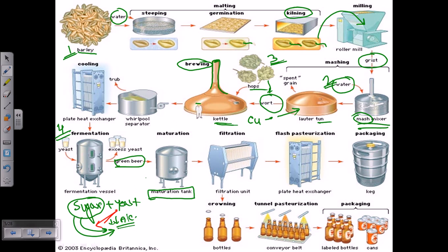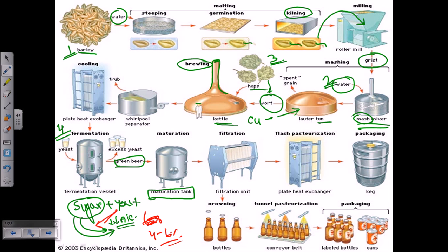Once the process of fermentation is complete, we need to transfer the mixture, which now contains approximately four to six percent alcohol — since this is beer, not a stronger spirit — into the filtration unit. The filtration unit can be of different types: clarifiers, filters, and so on. Using that filtration unit, we can filter out our beer.